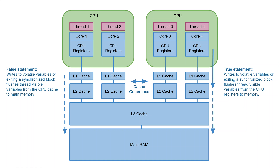In some of my earlier videos about Java concurrency and the Java Thread Visibility Guarantee, you might have heard me say something similar to this: writes to volatile variables or exiting a synchronized block flushes thread visible variables from CPU cache to main memory. However, this is not what happens in reality. What actually happens is that writes to volatile variables or exiting a synchronized block flushes thread visible variables from the CPU registers to main memory, as illustrated here — thread 4 is making a write and whatever thread visible variables are stored in the CPU registers are flushed to main memory.